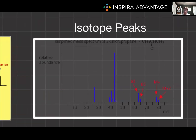Finally, before we do some practice, I want to talk about isotope peaks. Isotope peaks arise due to the presence of naturally occurring isotopes, such as carbon-13 and bromine-81. These peaks appear at M/Z values slightly higher than the main peaks and can help confirm the presence of specific elements in the molecule. For example, a compound containing one bromine atom will show a molecular ion peak with an isotope peak of a one-to-one intensity ratio separated by two M/Z units. Chlorine, on the other hand, will be a 75-25 split.